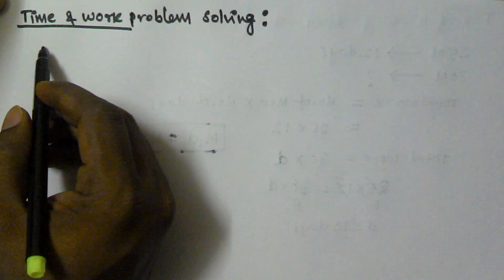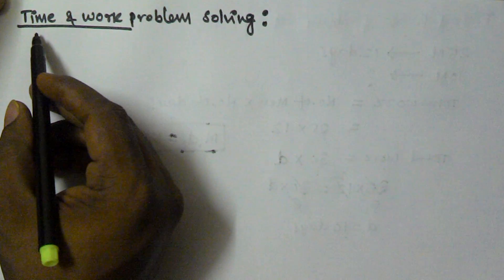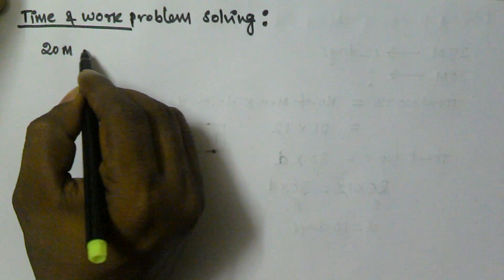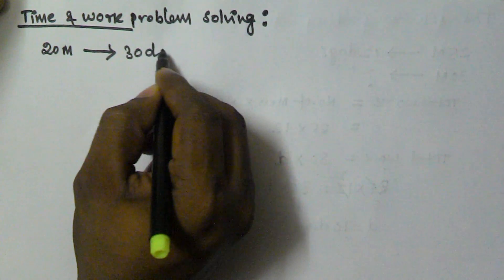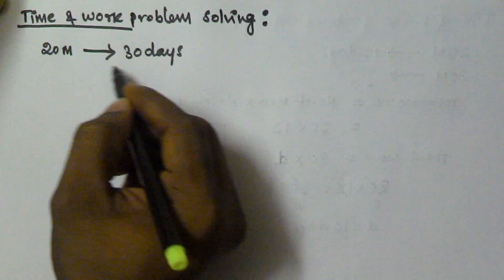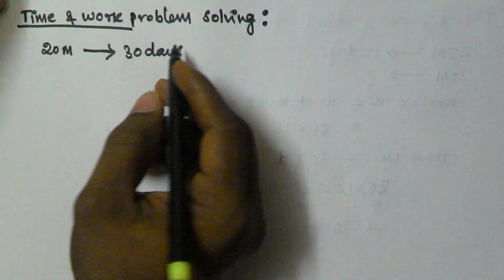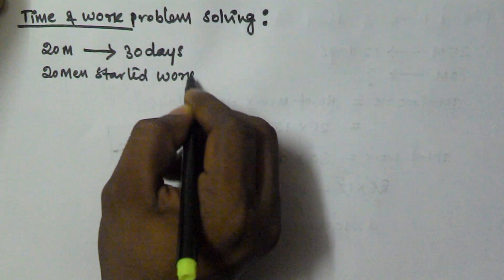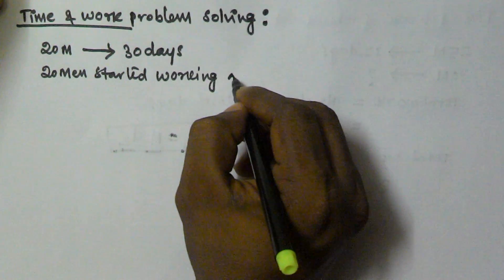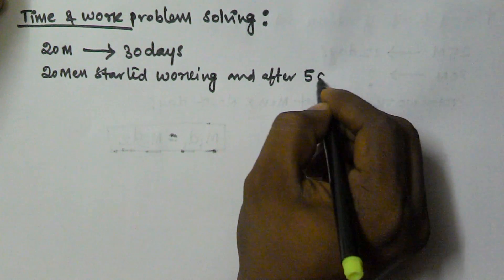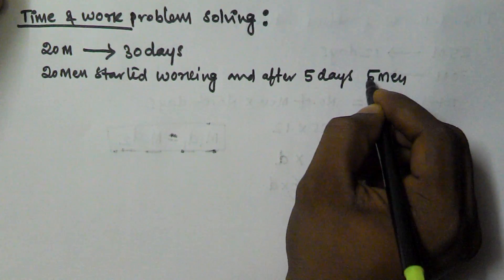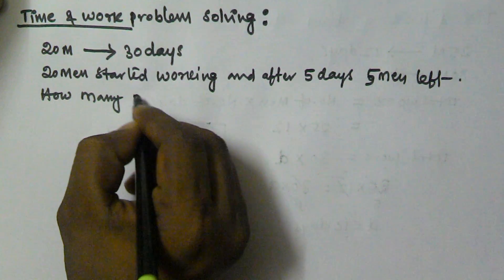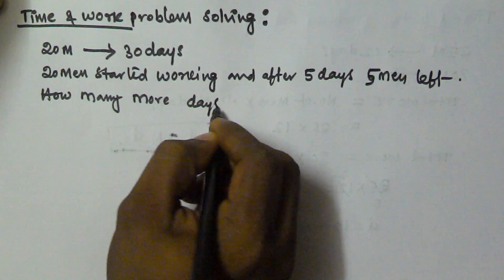Hello friends, in this video I am going to show you another type of problem related to time and work and how to solve it. So let us consider there are 20 men and they are going to finish a task in 30 days. 20 men started working and after 5 days, 5 men left. So how many more days are required to finish the task?